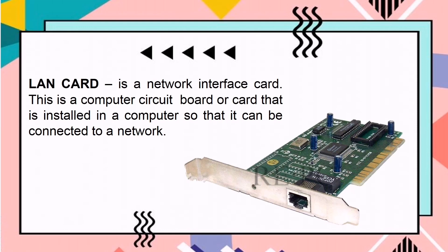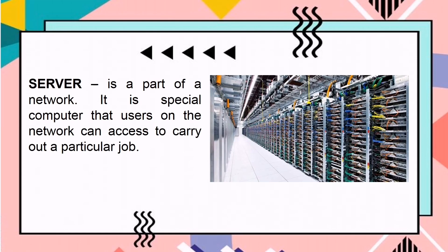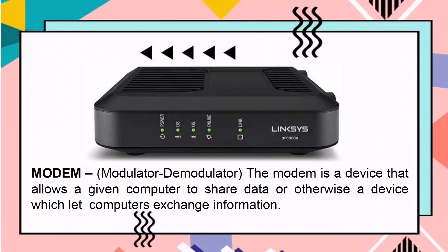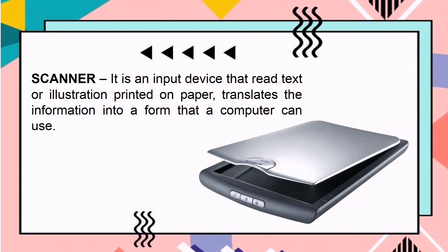LAN card is a network interface card. It is a computer circuit board or card that is installed in a computer so that it can be connected to a network. Server is a part of a network — it is a special computer that users on the network can access to carry out a particular job. Port hub — a port is a connector on the back of a computer or other device, and is either a serial port or a parallel port. Modem, or modulator-demodulator, is a device that allows a given computer to share data — a device which lets computers exchange information. Scanner is an input device that reads text or illustrations printed on paper and translates the information into a form that a computer can use.